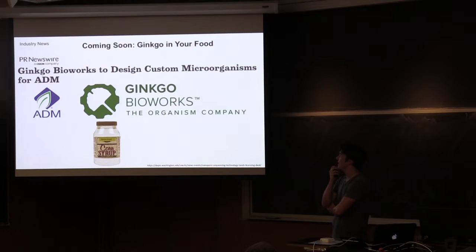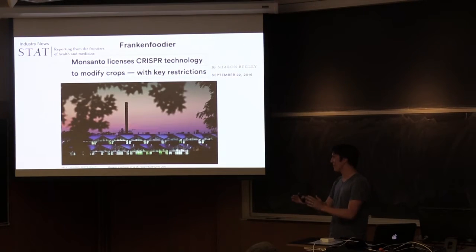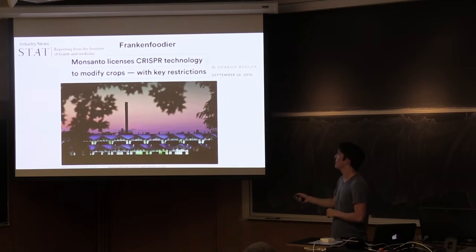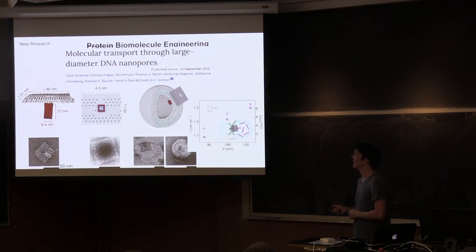So, in other industry news, Ginkgo Bioworks, the biosynthesis company, the microorganism company, announced a partnership with Arthur Daniels Midland, which is this giant food processing company. And they're going to make some undisclosed natural product for the food company that they'll use in food processing. The thing that Arthur Daniels Midland is most known for is corn syrup, so, not super great, but, you know. And to get even franker and foodier, Monsanto has licensed CRISPR technology to modify crops, but with a key restriction, and I think this is the first time this has happened, Monsanto got a license from the Broad Institute, but they're not allowed to use CRISPR to make gene drives, and that was specifically stated in the license, so that was a very interesting thing.